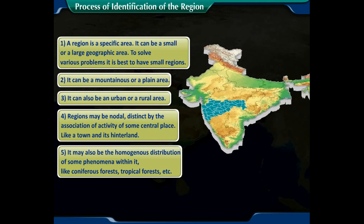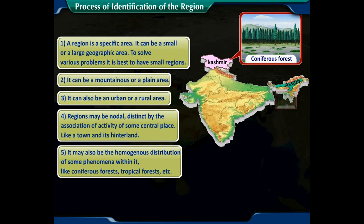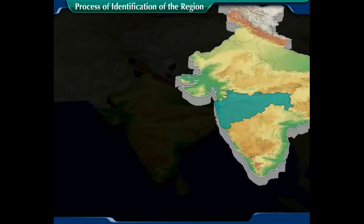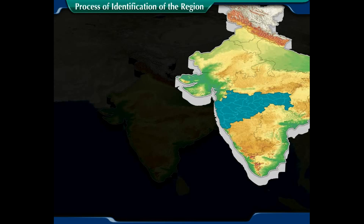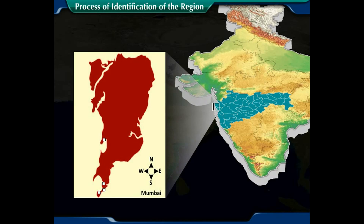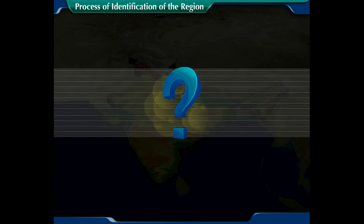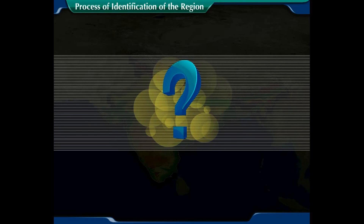Number five, a region may also be defined by the homogeneous distribution of some phenomena within it, like coniferous forests or tropical forests. Now let's learn about the core areas of a region. Each region has one or more core areas whose geographical pattern is excellently developed. The uniqueness around these core areas becomes less apparent, but they never lose their regional characteristics.